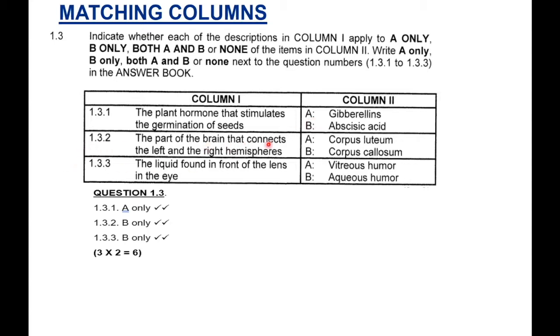1.3.2: The part of the brain that connects the left and the right hemispheres. This came out also in the November paper. So, the part of the brain that connects the two hemispheres, we know that's the corpus callosum. 1.3.3: The liquid found in front of the lens in the eye. So, it's easy to remember. In front of the lens, A comes first, A comes before V. So, the aqueous humor is found in the front of the eye and not the vitreous humor. So, your answer is B only. And those matching columns and answers were quite easy.